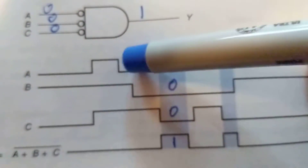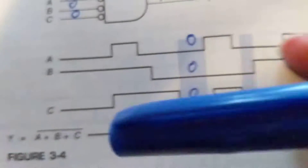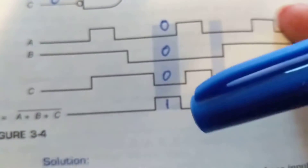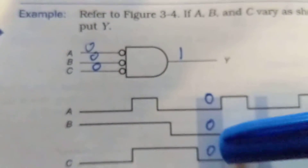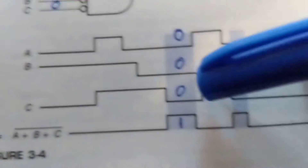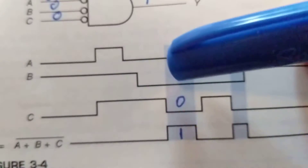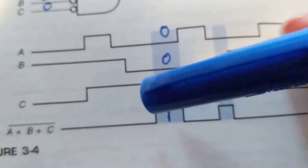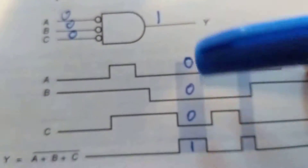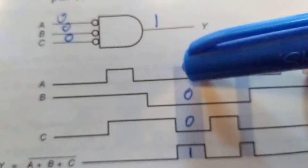A was a zero and is staying a zero; B was a zero and is staying a zero; C was a one but changed to a zero — it went from a high to a low, now it's a low. Everything in this time zone is zero, and that's the requirement. Therefore the output went from low to high — that is the proof.